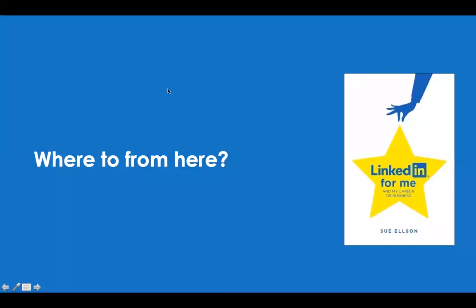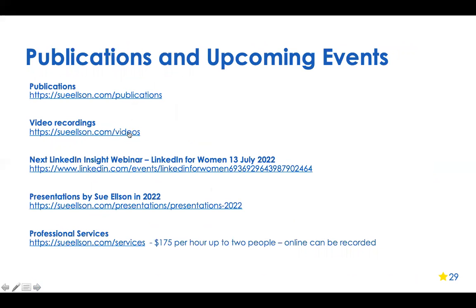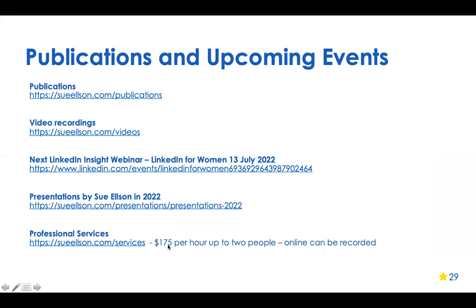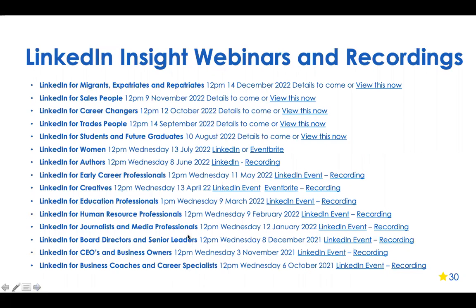We're nearly at the end. You can see more information on my website under publications, and check out other videos I've done. The next event in this series is LinkedIn for Women at midday on the 13th of July. If you'd like to hire me to help you — it's $175 Australian dollars per hour including GST, or no GST if you're from overseas, and it can be recorded. The slides should have already been emailed to everyone who registered. If you haven't got it, contact me via LinkedIn or email.